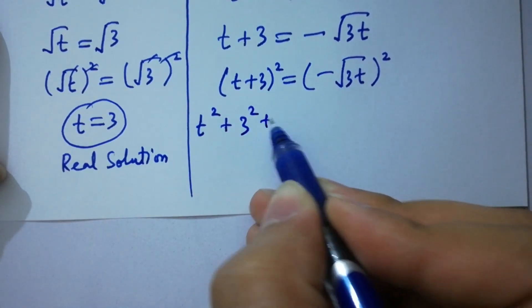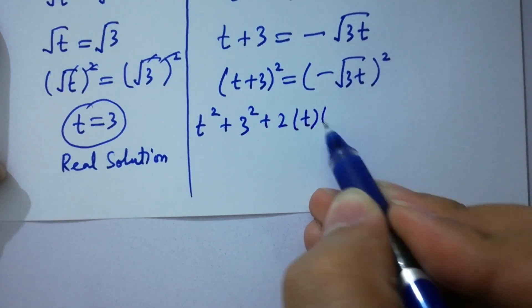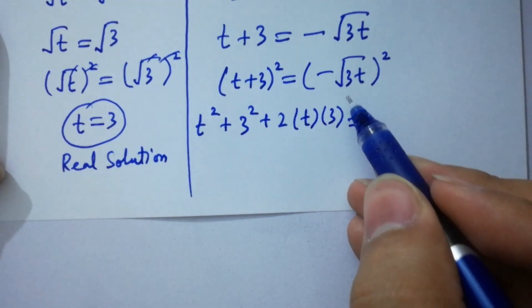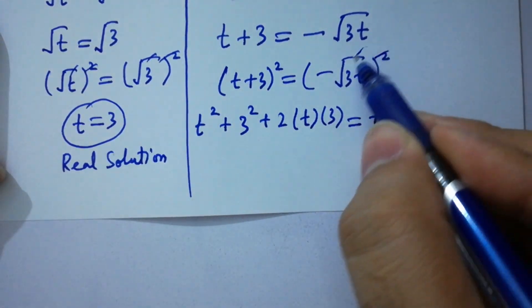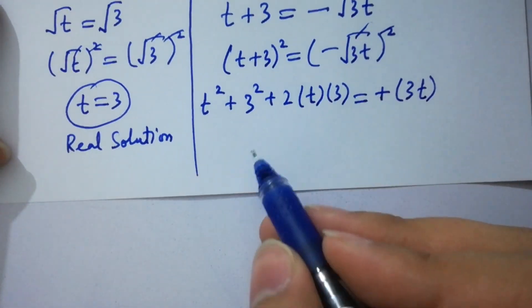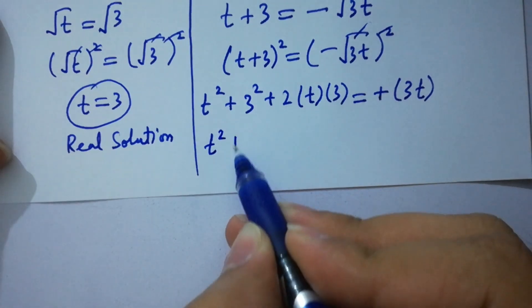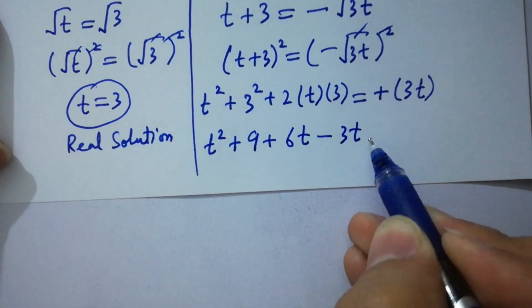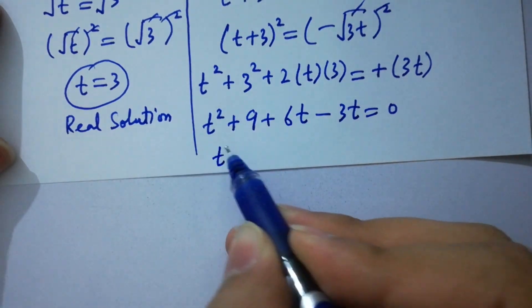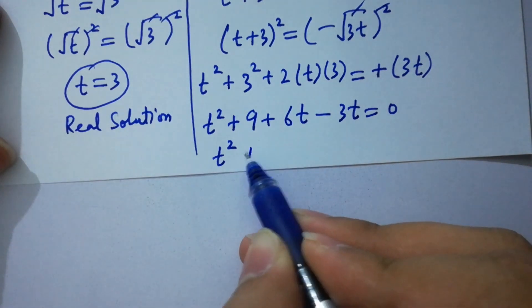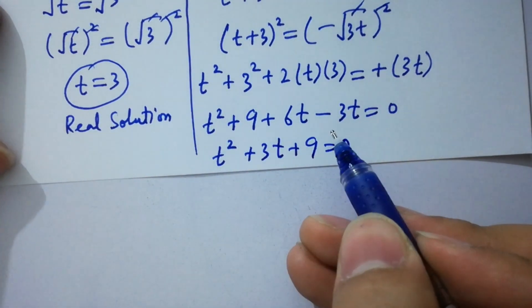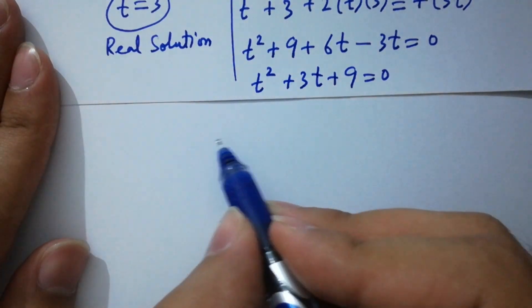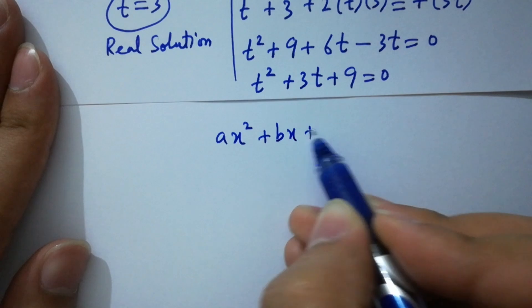We expand to get t squared plus 9 plus 6t equals 3t, since squaring the right side gives 3t. Rearranging: t squared plus 6t minus 3t plus 9 equals 0, which gives t squared plus 3t plus 9 equals 0. This is a quadratic equation of the form at squared plus bt plus c equals 0.